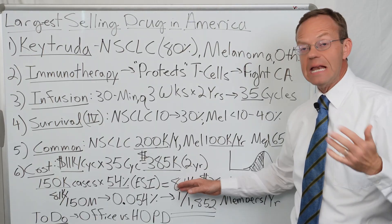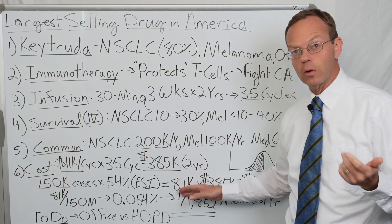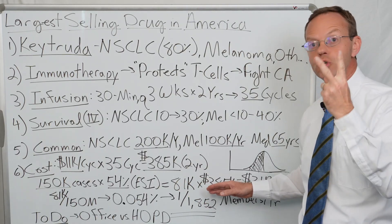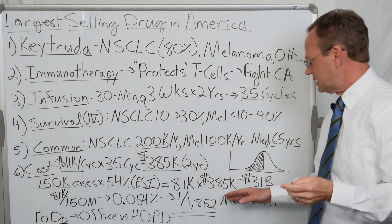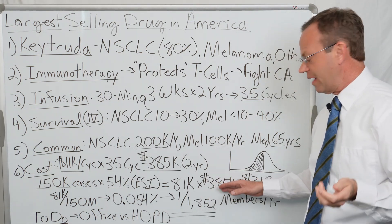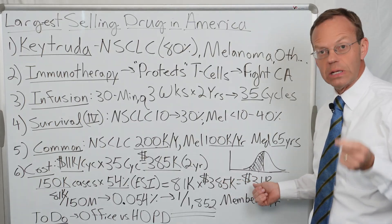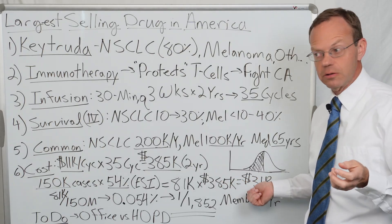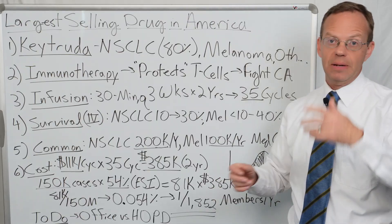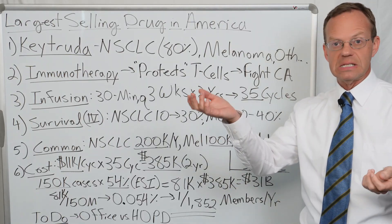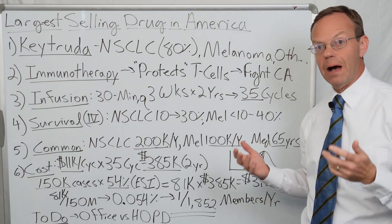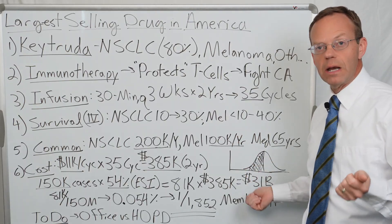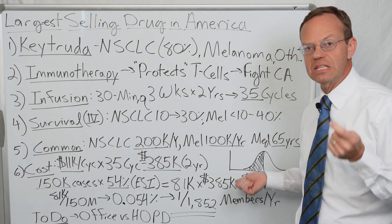If you take the 81,000 people on employer sponsored plans and multiply by the two year cost of $385,000, that adds up to $31 billion. It could be as low as $20 billion or as high as $40 billion, but employers are spending about $31 billion a year on Keytruda.